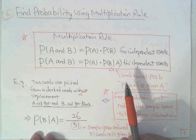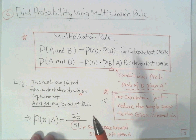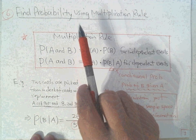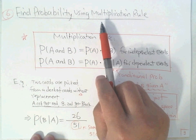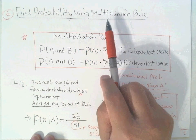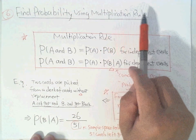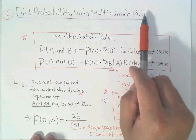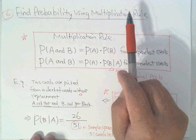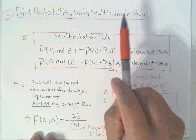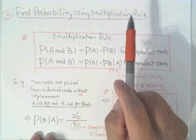Hello, this is Paul from Forsyth Tech. In this lecture, I'm going to introduce a very important rule in probability. We call it the multiplication rule. Using this rule, we can solve complicated probability questions by step-by-step calculation.